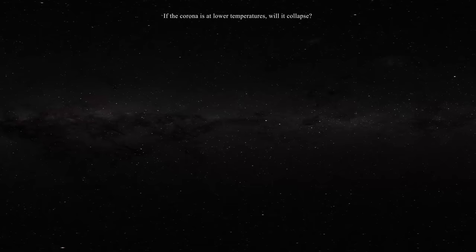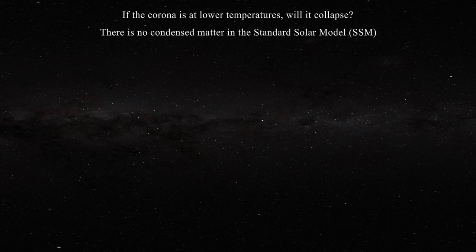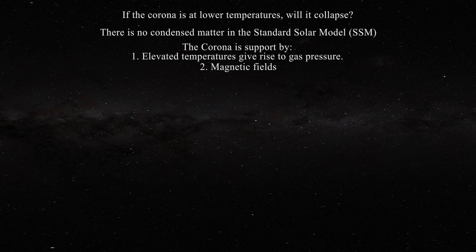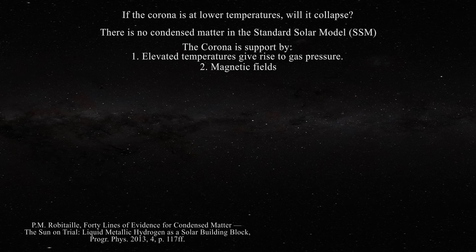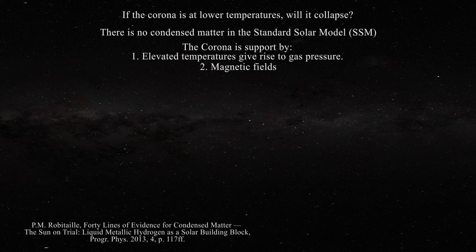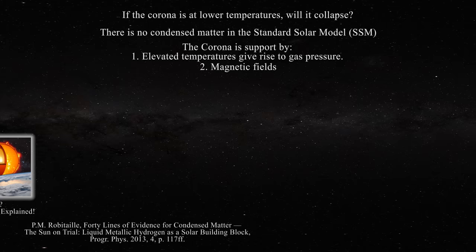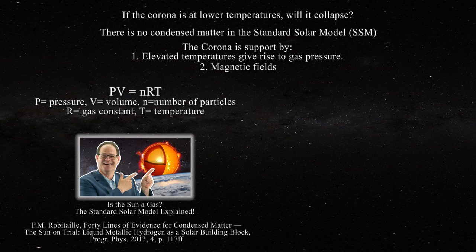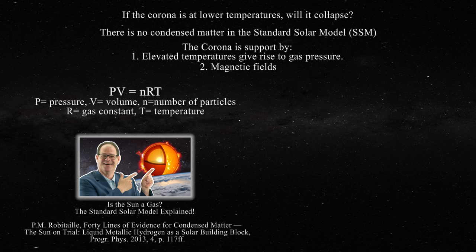Back to our question. In the context of the gaseous model, the corona possesses no condensed matter — it is gaseous plasma supported by elevated temperatures giving rise to gas pressure, and also presumably by magnetic field lines. Yet one cannot generate gas pressure without a surface, as long recognized throughout physics and chemistry. The derivation of the ideal gas law depends on an enclosure. Astronomers believe they can apply this law to a gaseous sun without any rigid confinement — this is a violation of both elementary physics and chemistry. Furthermore, the measurement or generation of pressure depends on the presence of a real surface, not an imaginary one.